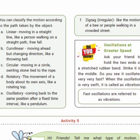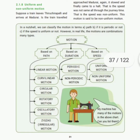Zigzag motion is irregular — for example, the motion of a bee. Insects and honey bees move in a zigzag path, and similarly a person walking in a crowded street moves in a zigzag manner.